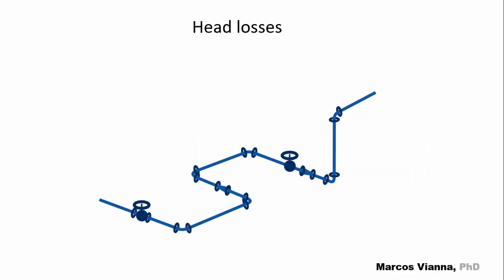Let's consider this small circuit. Head losses occur in pipes, fittings, valves, wherever the flow is modified.